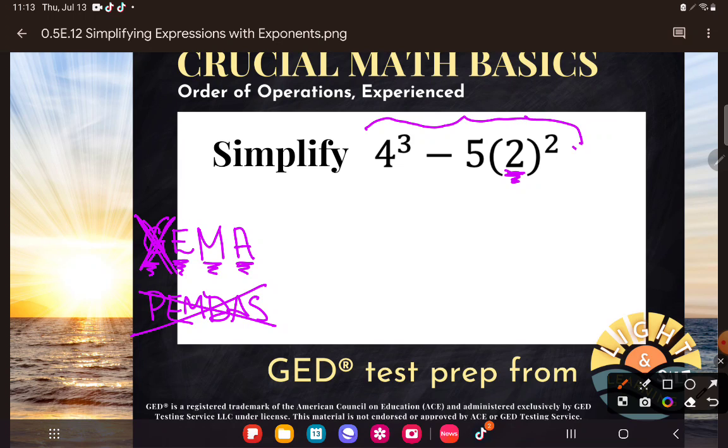So now we move on to the second step, exponents. And we have a couple of exponents. We have 4 to the third power and we have 2 to the second power. That is where we should start. OK, so 4 to the third power. If you don't have it memorized, which I don't think most people do, then we'll just come over here to the side and do our side work.